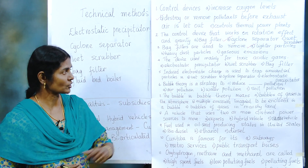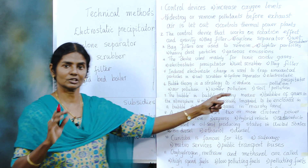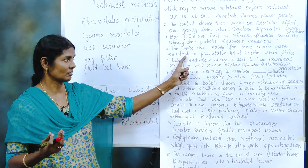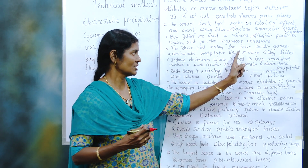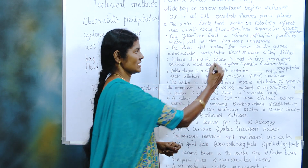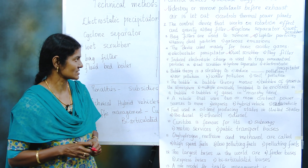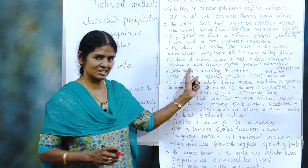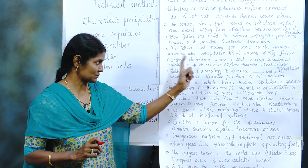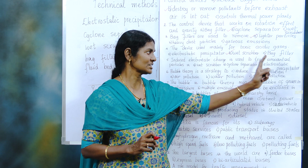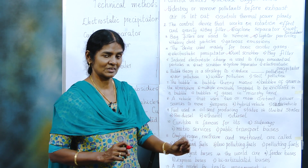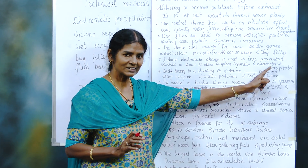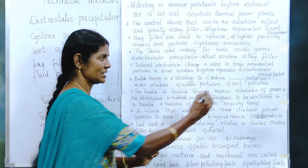The device mainly used for toxic acidic gases — how to remove them specifically at higher temperatures? Is it electrostatic precipitators, wet scrubber, or bag filter? Wet scrubber is specifically used for removal of acidic gases. Next: induced electrostatic charge is used to trap unwanted particles — which device? The keyword here is electrostatic, so it should be electrostatic precipitator.